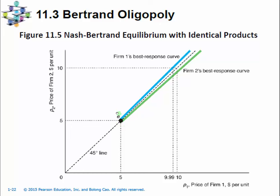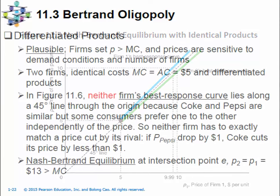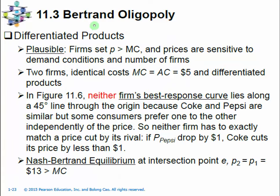Because firms in the standard Bertrand duopoly make no economic profit and price is not sensitive to demand conditions or the number of firms as in the Cournot model, we don't think the standard Bertrand duopoly is as realistic as the Cournot model. However, if we extend the basic Bertrand model to differentiated products — meaning the firms offer similar but not identical products — then this kind of Bertrand model will be more plausible, because now the price can be set higher than the marginal cost as the firms have their own loyal customers, and the price will be sensitive to demand conditions and the number of competitors.